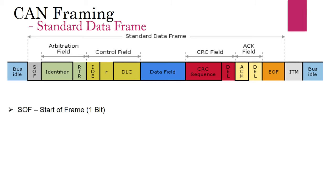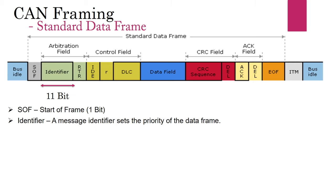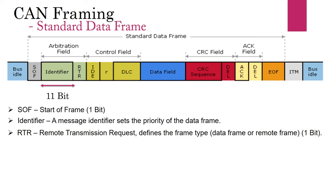The start-of-frame bit indicates the start of a new frame in the network. The standard data frame defined under CAN specification 2.0A contains an 11-bit message identifier, which is used for arbitration. The RTR bit defines the frame type — whether the frame is a data frame or a remote frame. We will talk more about arbitration and frame types in the next video, after discussing the transmission of dominant and recessive bits.